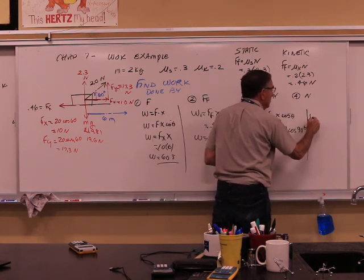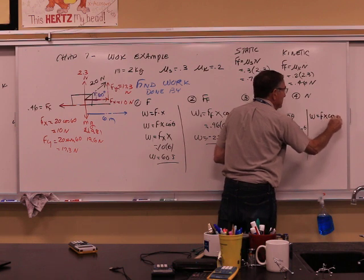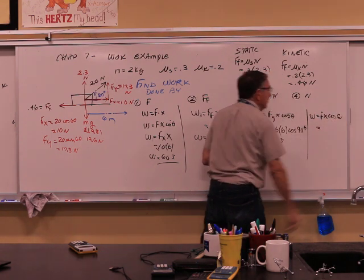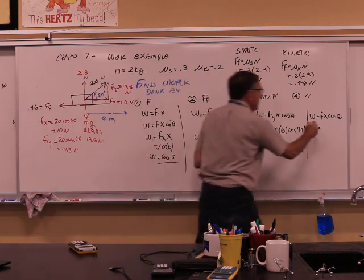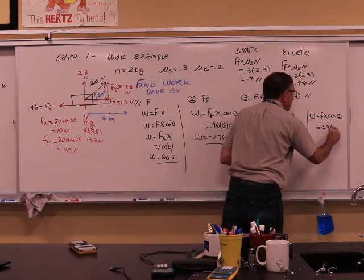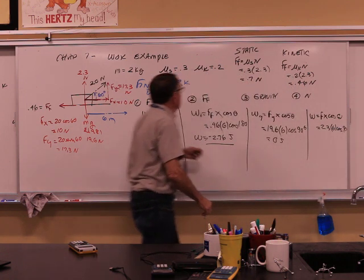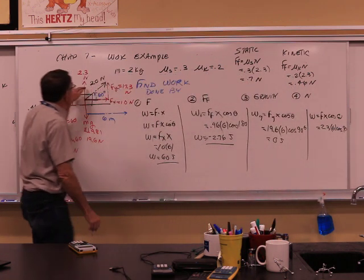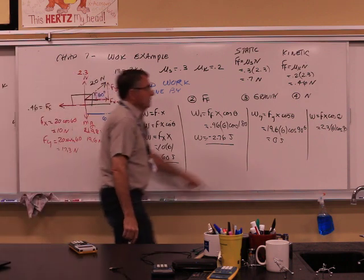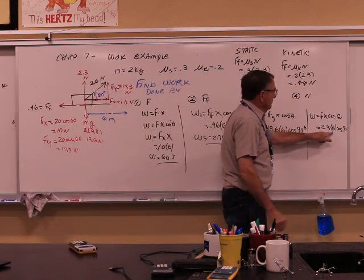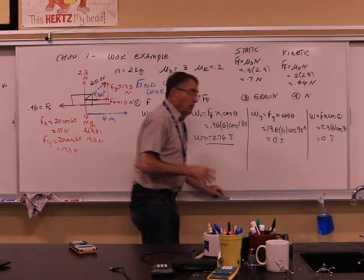Work done by the normal force: force times distance times cosine of the angle. Normal force is 2.3 newtons, times 6 meters, times cosine of 90 degrees. Again, the normal force is perpendicular to the displacement, so the angle is 90 degrees — cosine of 90 is 0 — giving 0 joules.